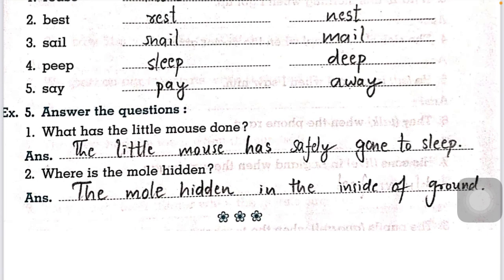Now example number five: answer the following questions. What has the little mouse done? The little mouse has simply gone to sleep. Where has the mole gone? The mole has gone inside the ground. So this is all about the comprehension. In the next lesson we will meet and talk about the 25th part of English Grammar. Till then, bye bye, take care.